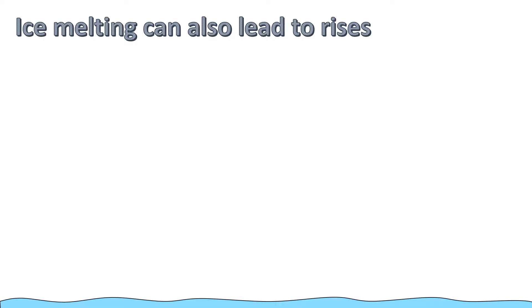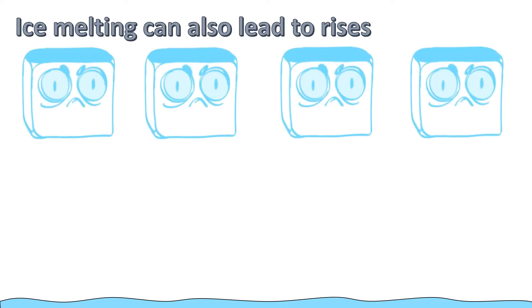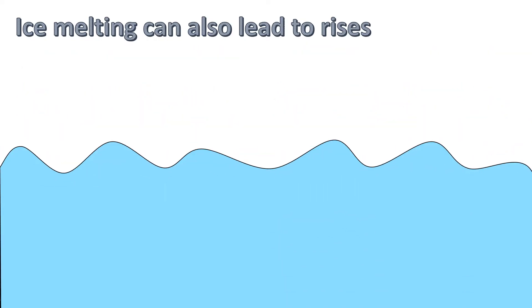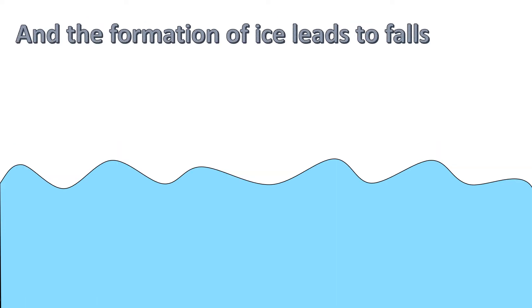Higher global temperatures due to climate change also causes glaciers and ice sheets to melt. Water that was locked up in ice melts and the meltwater enters river systems. It will eventually reach the mouth of the river and be stored as liquid water in the sea. The volume of water in the sea increases, therefore sea levels rise. The opposite can happen in an ice age.